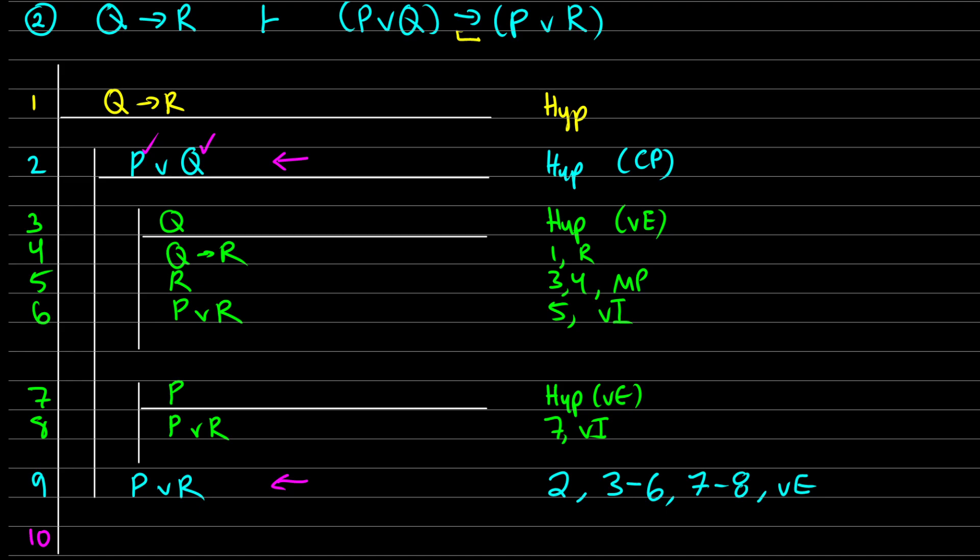Therefore, in line ten, we can use the conditional proof on that. If we assume that P or Q is true, then we have shown that we get P or R. So from line two to line nine, we did a CP, a conditional proof.